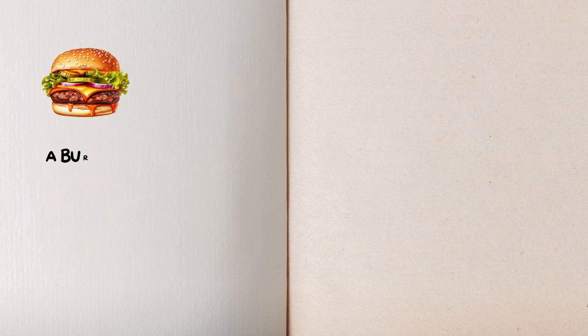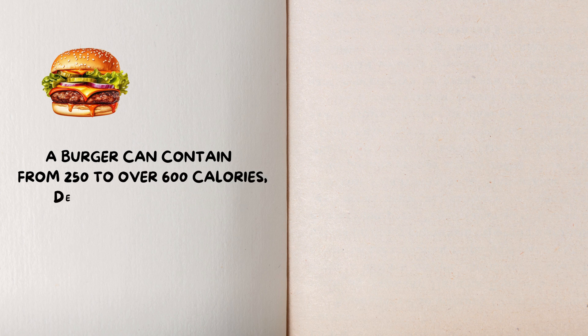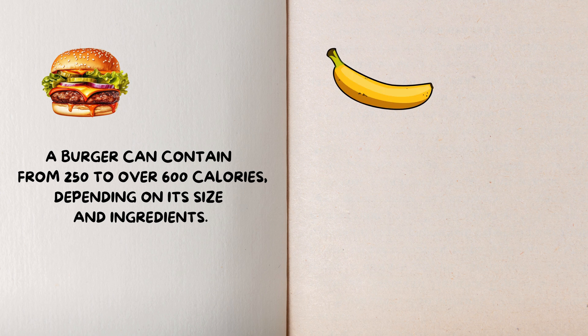For example, a burger can contain anywhere from 250 to over 600 calories, depending on its size and ingredients, while a banana typically contains about 90 to 121 calories.